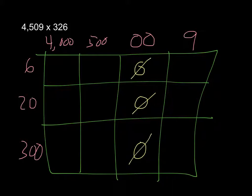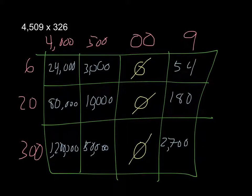And then we would solve it like we normally would, add it together, and multiply. Here's what it looks like. Remember, to get this value, we multiplied 4,000 and 6. To get this value, it was 500 and 20. And for this value, we multiplied 9 and 300.